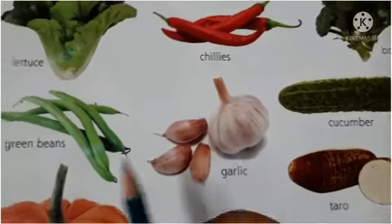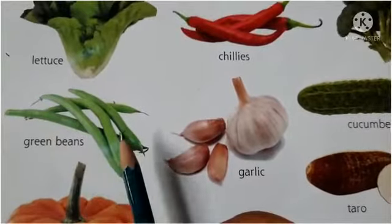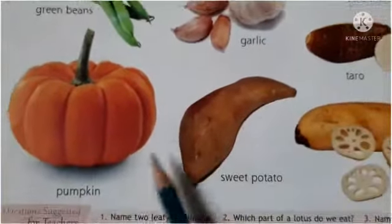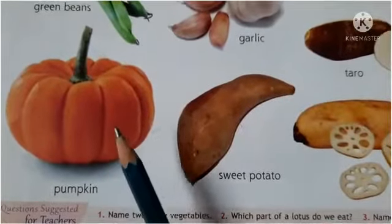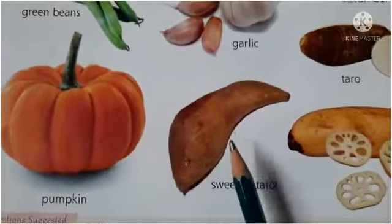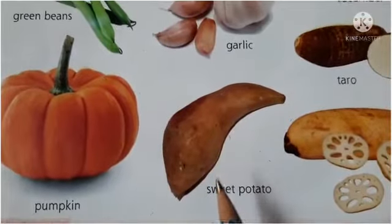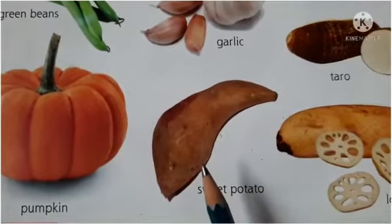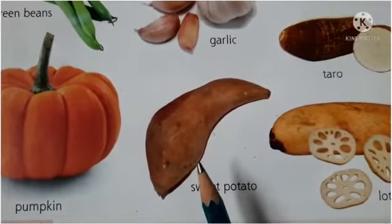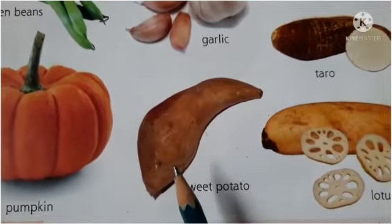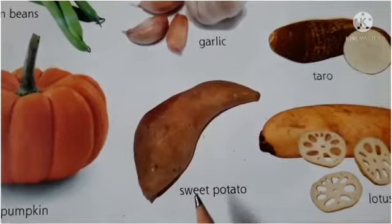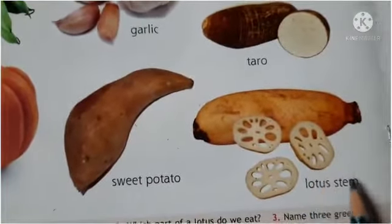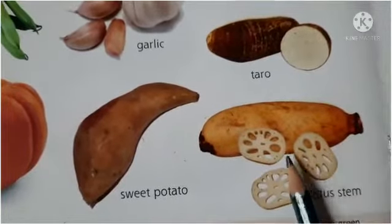Garlic — Lahsun. Green Beans — Hari Sem. Taro — Arbi. Pumpkin. Sweet Potato — Shakarkand. And this is Lotus Stem — Kamal Kakdi.